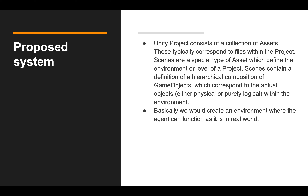Unity consists of a collection of assets, which typically correspond to files within the project. Scenes are a special type of asset that define the environment or level of a project. Game objects correspond to the actual objects within the environment. Unity provides capacity for terrain rendering, artificial intelligence, rigid bodies, and many others, and customizes components using C# scripts or external plugins.